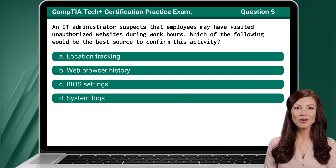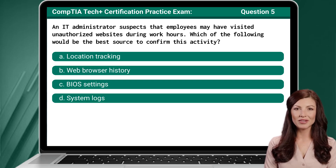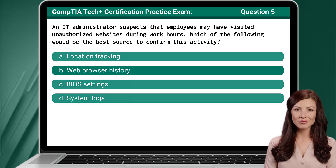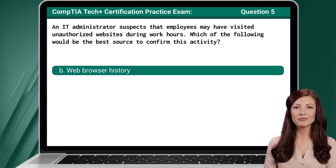Question 5. An IT administrator suspects that employees may have visited unauthorized websites during work hours. Which of the following would be the best source to confirm this activity? The answer is B: web browser history.